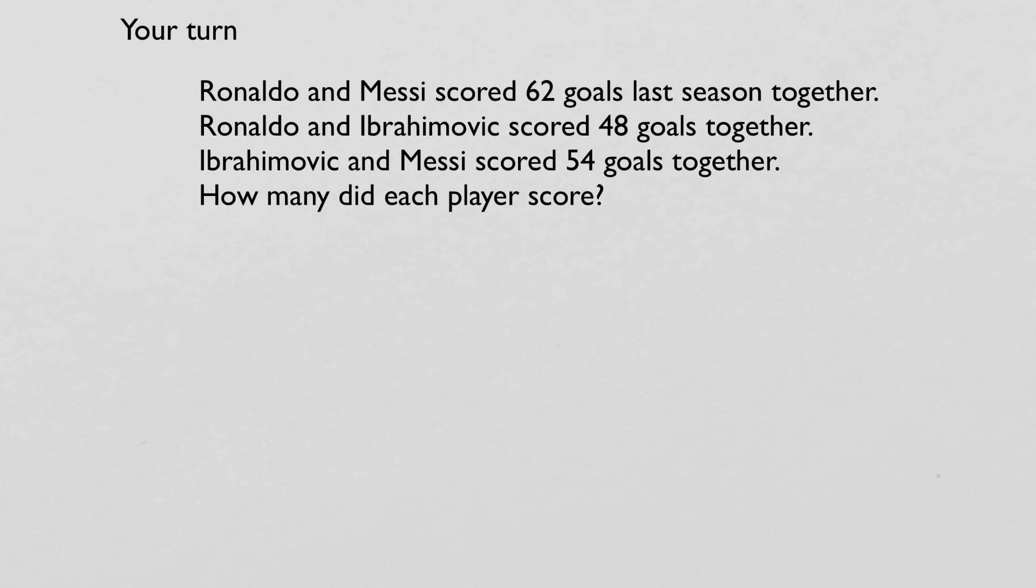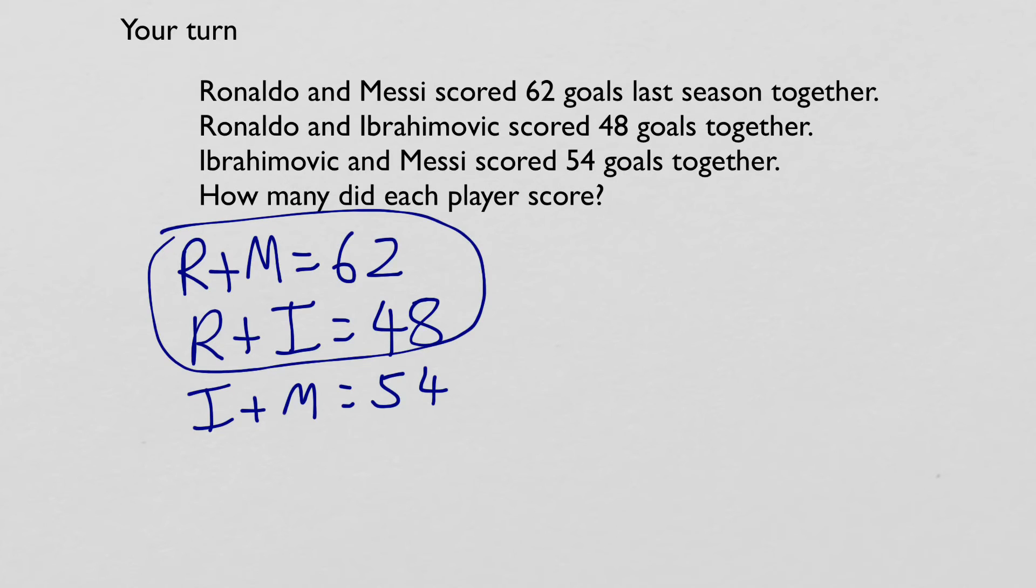All right. So let's see the scores on the doors. First thing, make an equation for each clue. R plus I equals 48. I plus M equals 54. Add two of your equations together. So I'm going to add those two. So adding everything together, two R plus M plus I equals 110.